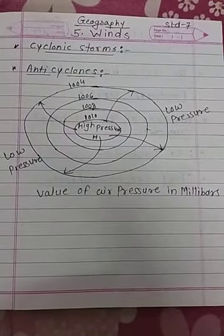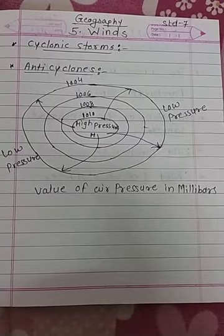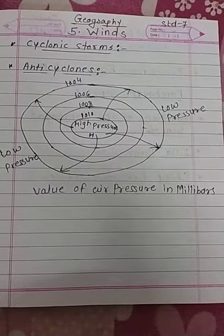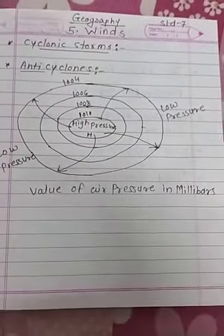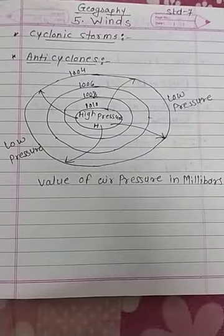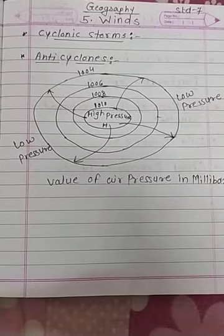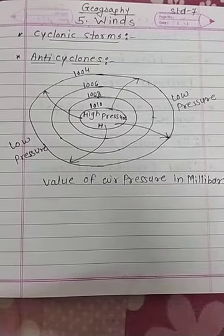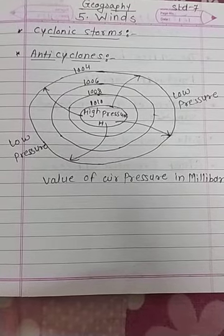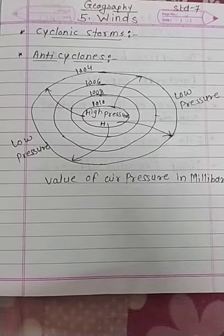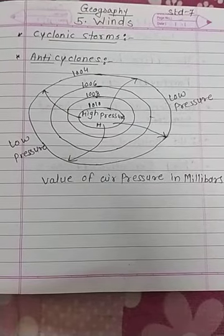Today we will start from the cyclonic storms. Cyclones occurring in the western part of the Pacific Ocean, along the coast of Japan, China, Philippines, etc. are known as typhoons. These storms arise in the months between June and October. Due to high velocity winds and heavy rain, these prove to be destructive.